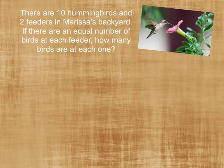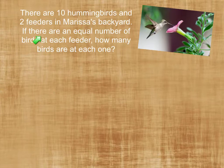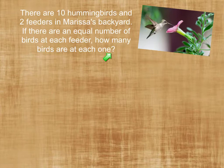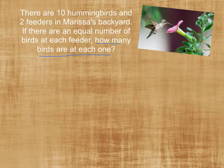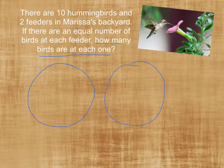First, let's look at what dividing by two really means. There are ten hummingbirds and two feeders in Marissa's backyard. If there are an equal number of birds at each feeder, how many birds are at each one? We need to figure out what we're looking for. We're going to draw two circles to represent the two feeders.